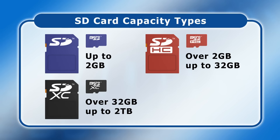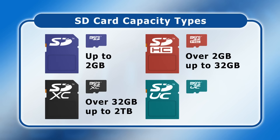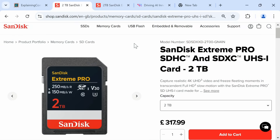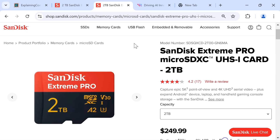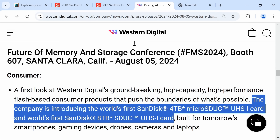In June 2018, the SD Association announced a fourth capacity type called SDUC, or Secure Digital Ultra Capacity, for cards over 2TB and up to 128TB. Even though the SDUC standard was released over six years ago, at the time of making this video in January 2025, the highest capacity cards on the market are 2TB SDXC, such as the SanDisk Extreme Pro Media. However, in August 2024, SanDisk announced it will be introducing a 4TB micro SDUC card and an 8TB full-size SDUC card, with this likely to occur in 2025.